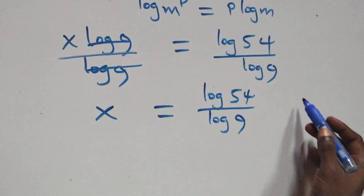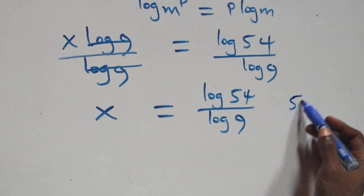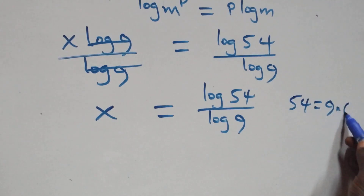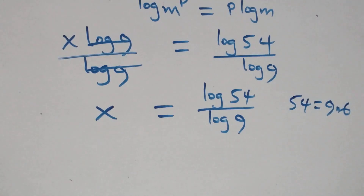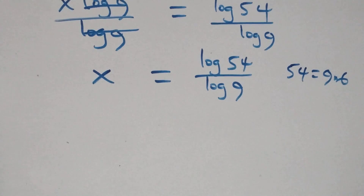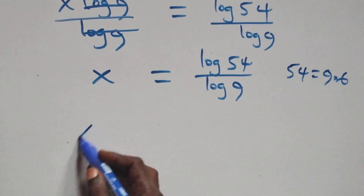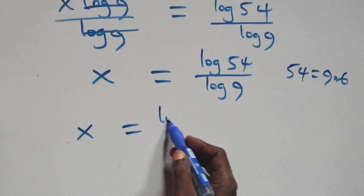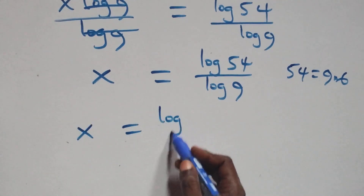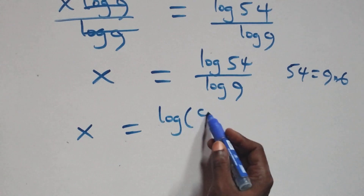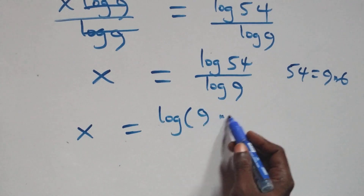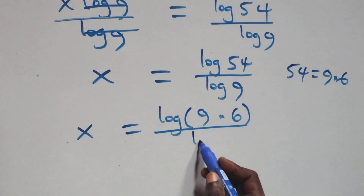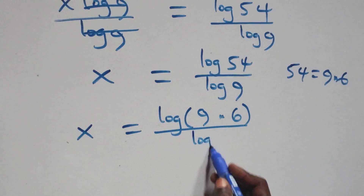Then here, we can express 54 as 9 times 6. Which implies here, we have x equals to log 9 times 6 over log 9.